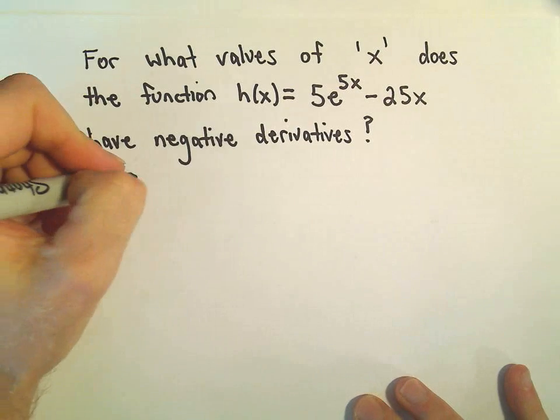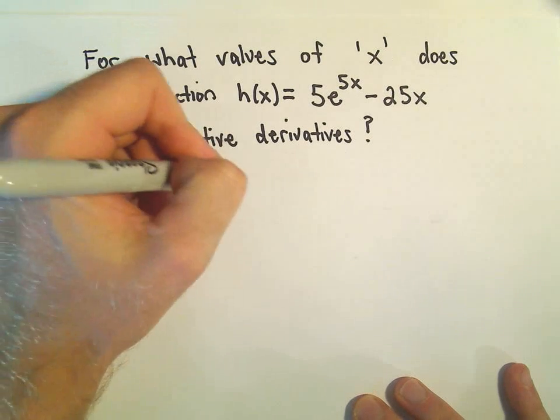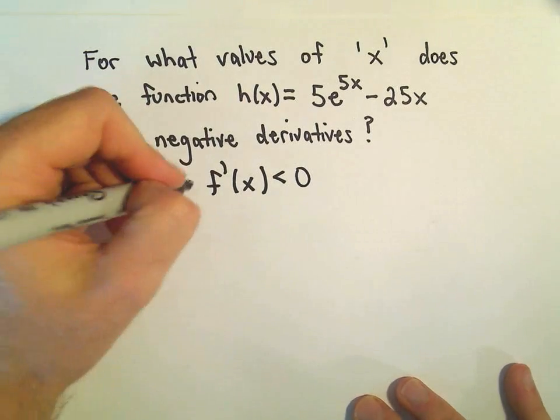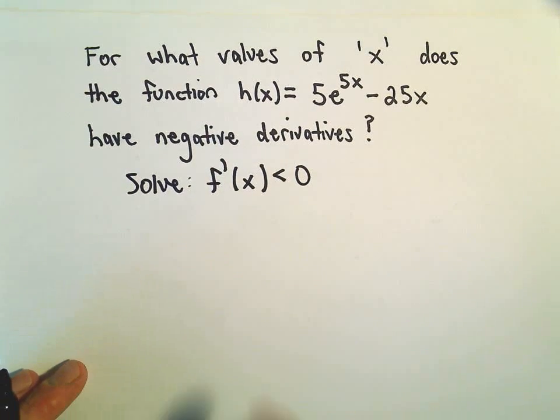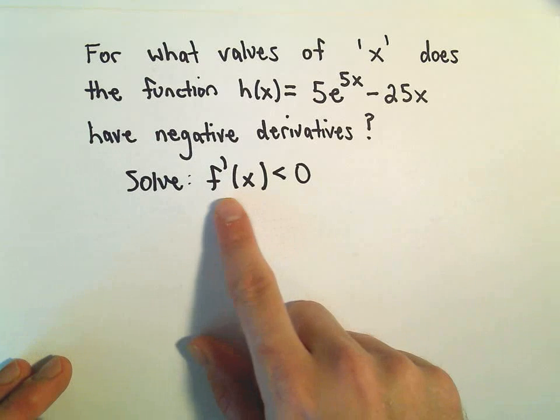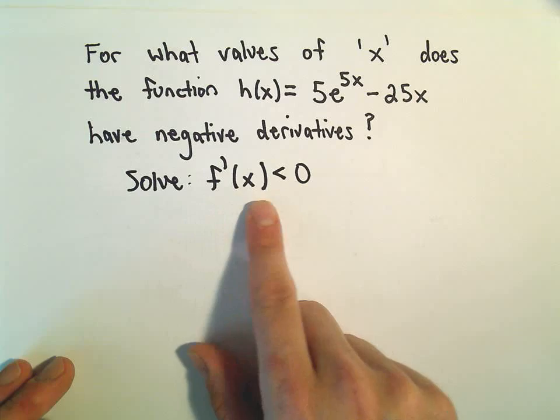So really what we're trying to do is we're trying to solve, we want to figure out when the derivative is less than 0. That would tell us when we have negative derivatives. So when is the derivative, for what values of x is the derivative negative?